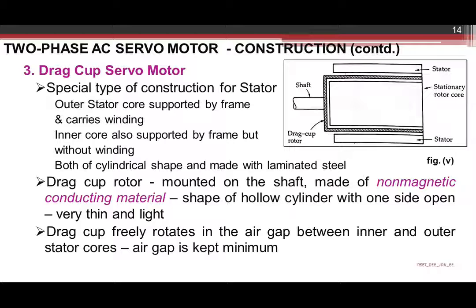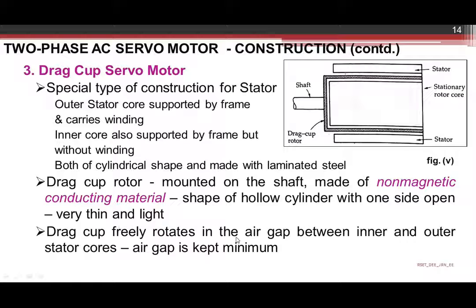The third type, which is commonly used, is the drag cup servo motor. There is some difference in the construction of the stator as well. An outer stator supported by the frame carries a winding, and there is also an inner core supported by the frame but without winding. Both are cylindrical and made up of laminated steel. A drag cup rotor is mounted on the shaft, made up of non-magnetic conducting material in the shape of a hollow cylinder open at one end. It is very thin and light, and it freely rotates in the air gap between the inner and outer stator cores, keeping the air gap minimum.